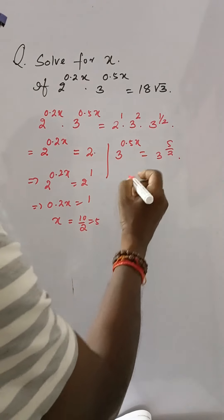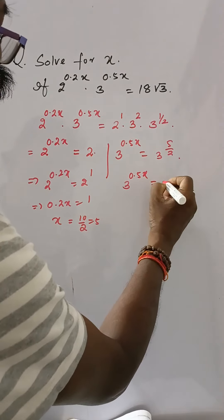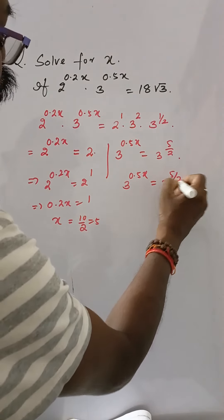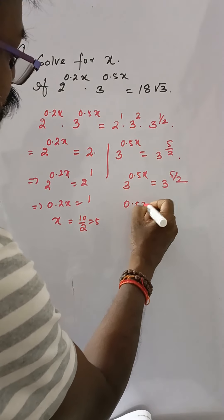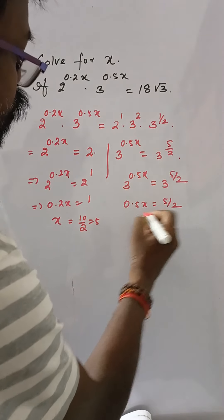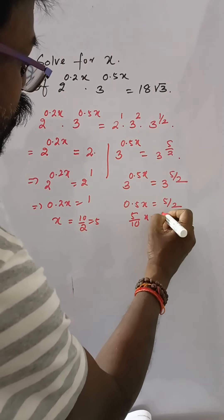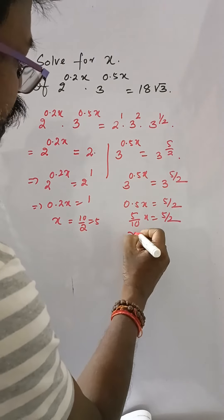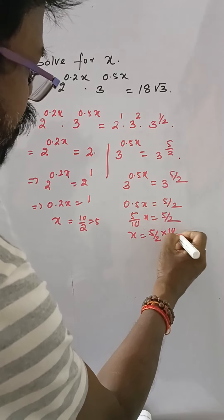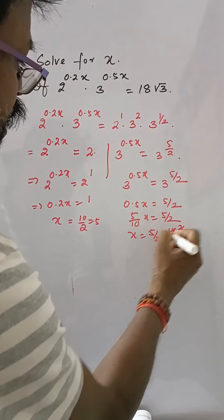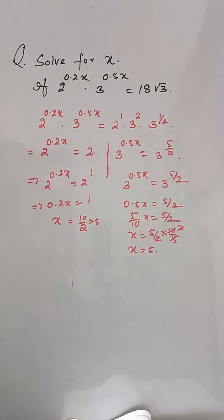In the second case also, 3 to the power 0.5x is equal to 3 to the power 5 by 2. Then 0.5x is equal to 5 by 2, that is 5 by 10 times x equals 5 by 2. So x is equal to 5 by 2 into 10 by 5, which simplifies to x equals 5 also.